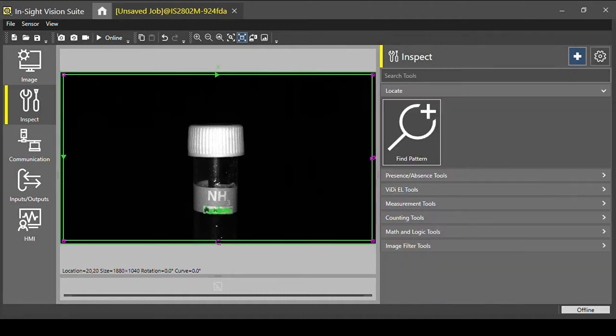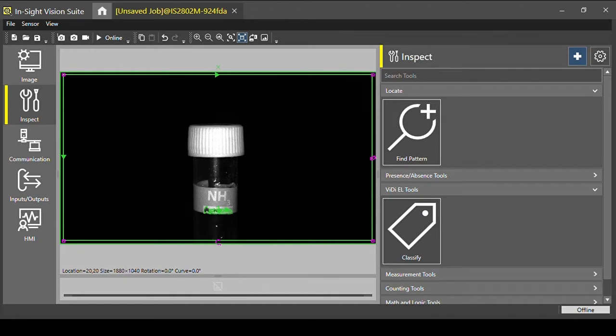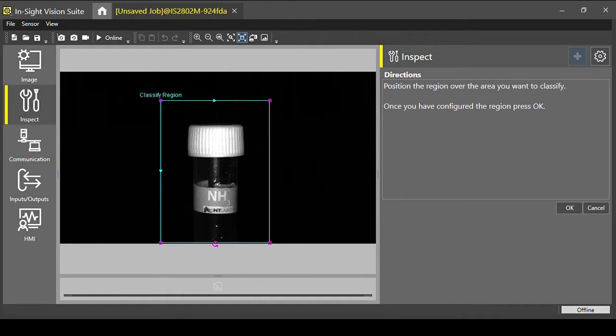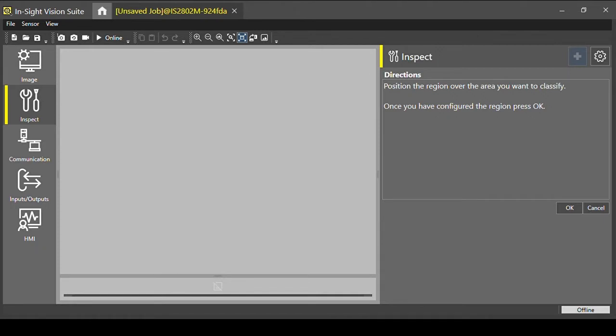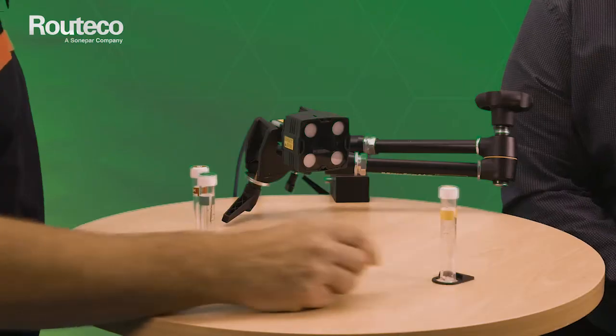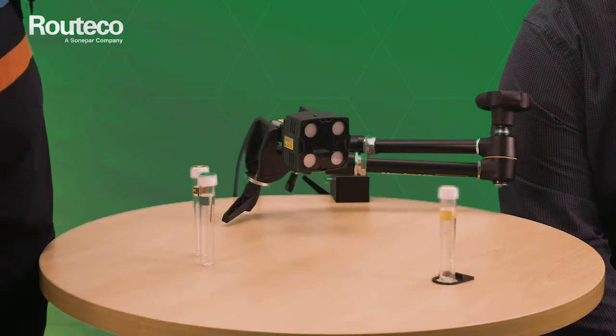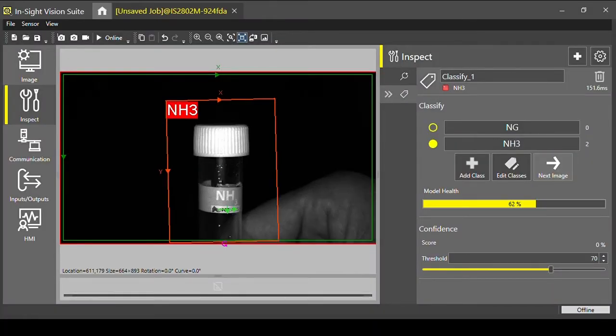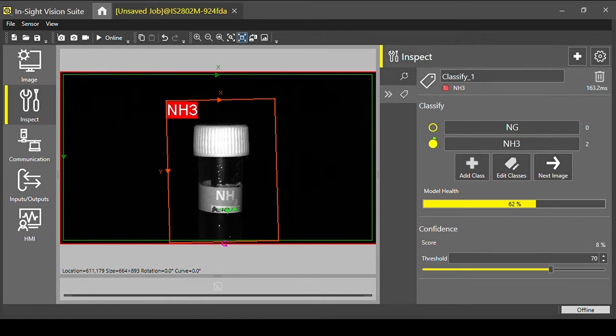So next tool we're going to look at is the Edge Learning Classify tool. This is the tool with artificial intelligence built in. Click on the Classify tool and then going to draw the particular region around the product that we're interested in looking. So this is where we're going to be able to do our inspections. So now I've added the Classify tool to our job. And then what we're going to do is go through each particular class and take some images. The first test tube we have here is the NH3. So I'm just going to call the class NH3. And then we're just going to take a sample of images, label that as NH3. And Darren's just going to slightly move it so that we've got a slightly different image. And we're just going to label that as NH3. So that's our first class completed.